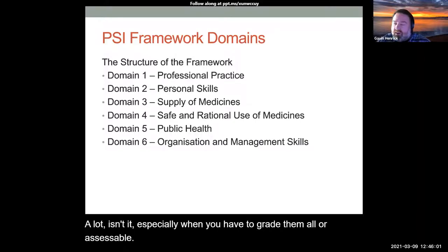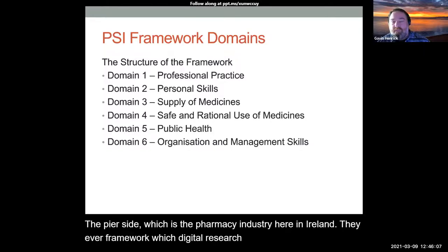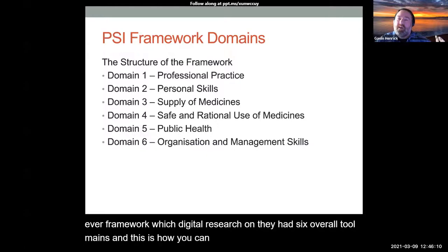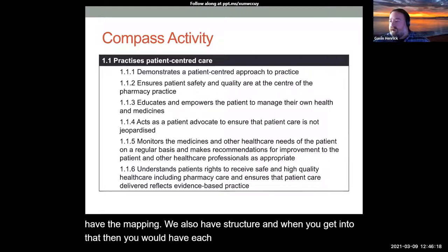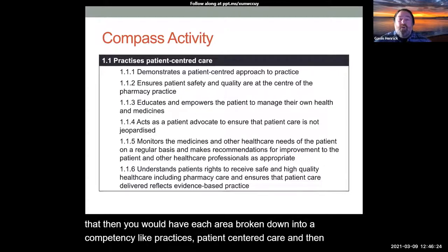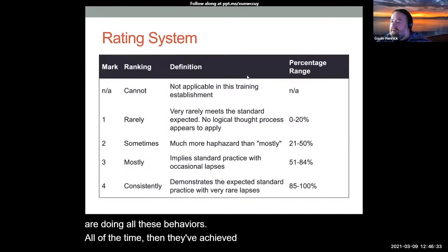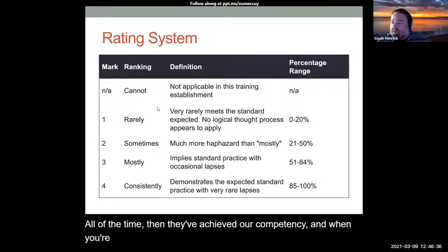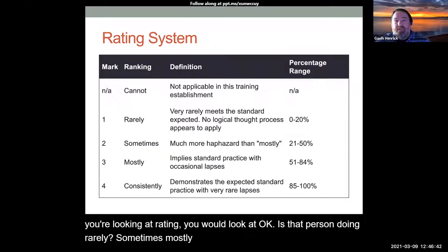The PSI, which is the pharmacy industry here in Ireland, has a framework which they did a lot of research on. They had six overall domains, and this is how you can go about structuring. You might have the mapping and the structure. When you get into that, each area is broken down into a competency like practices and patient-centered care. Then you have behaviors inside of that, which basically define how, if that person is doing all these behaviors all of the time, then they've achieved that competency. When looking at rating, you would look at whether a person is doing it rarely, sometimes, mostly, or consistently.